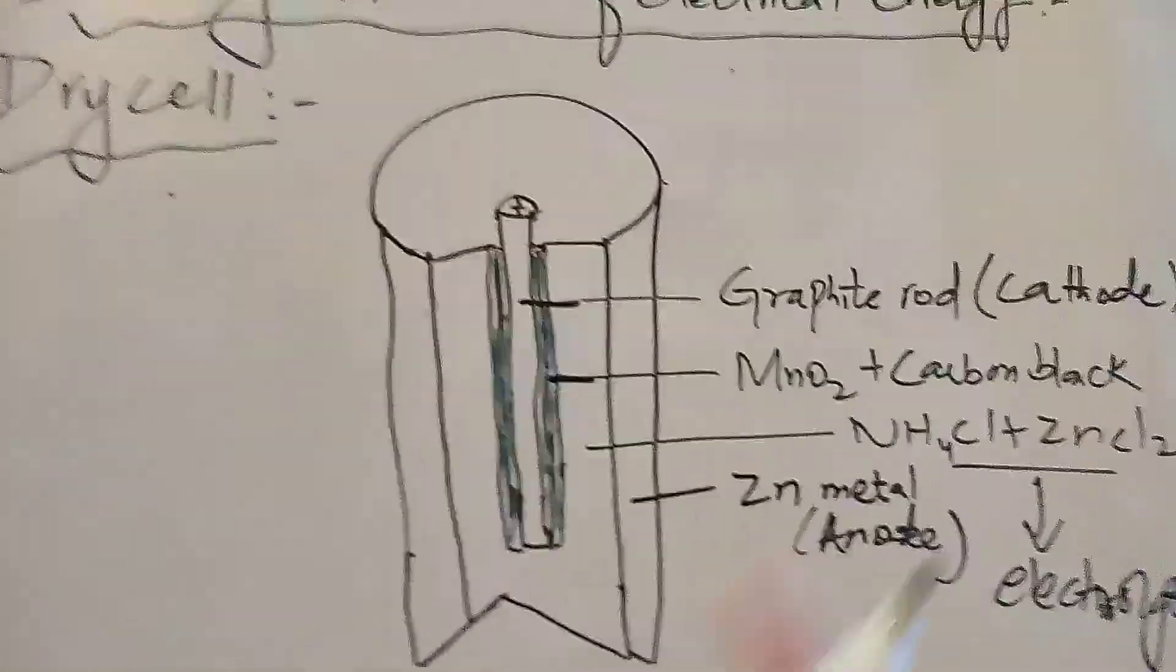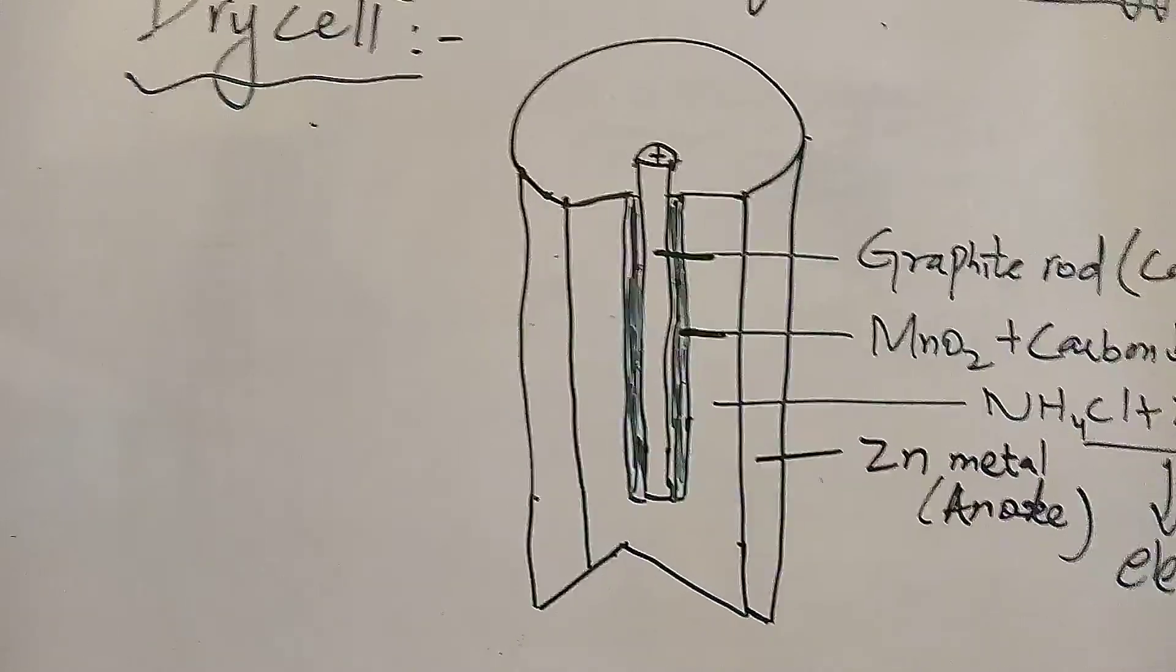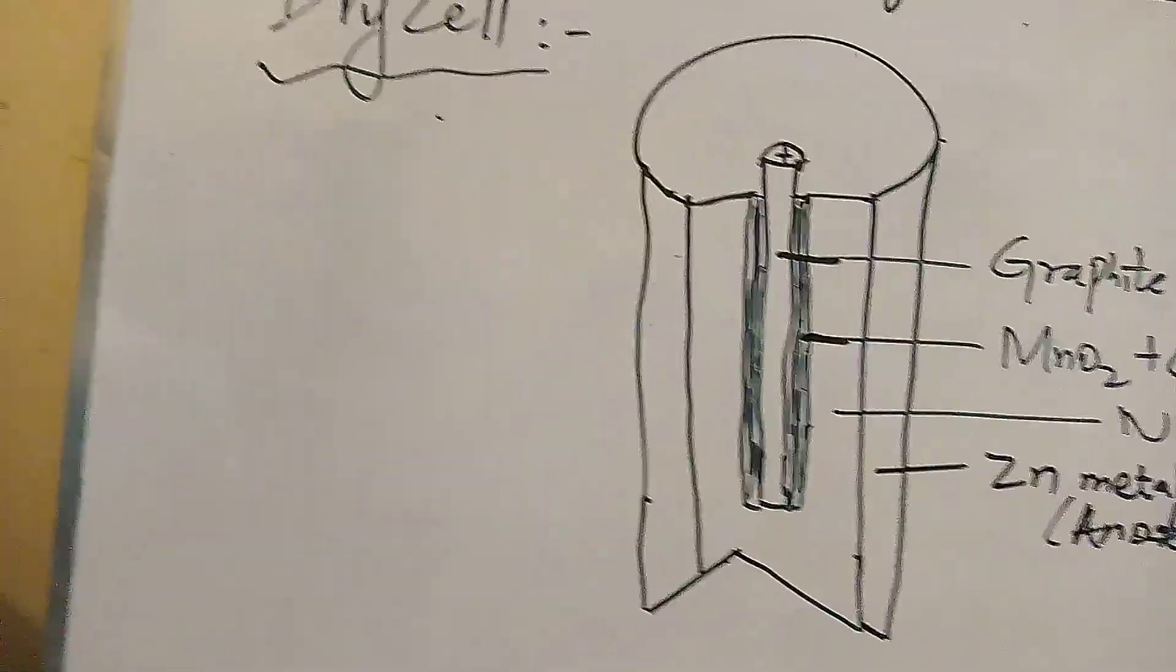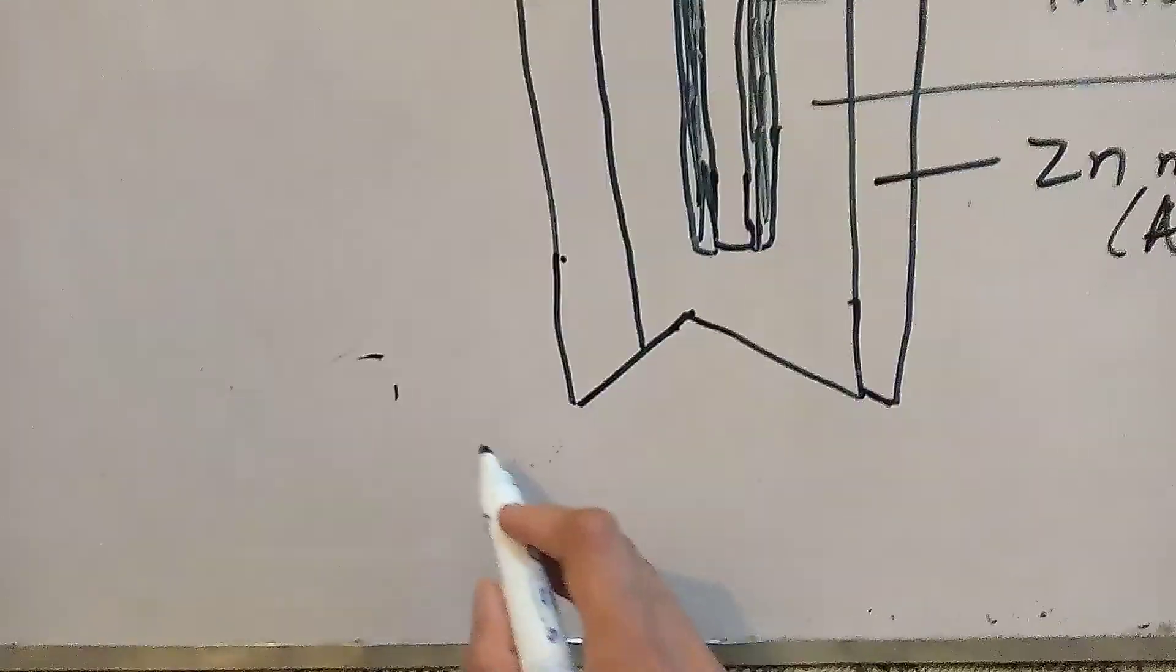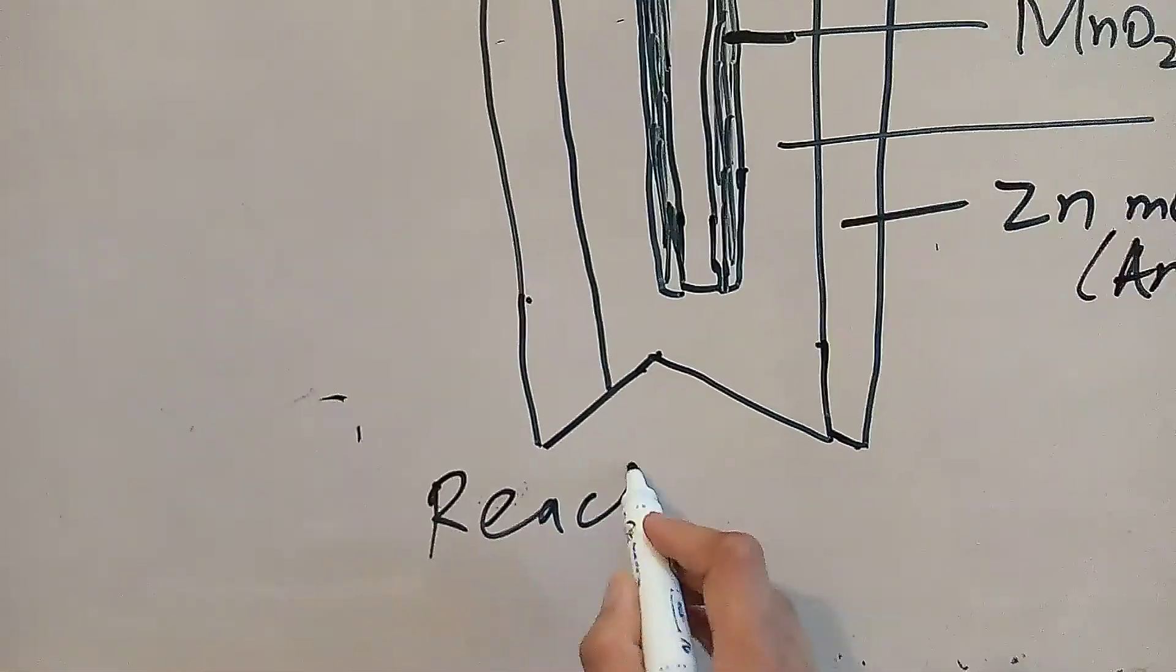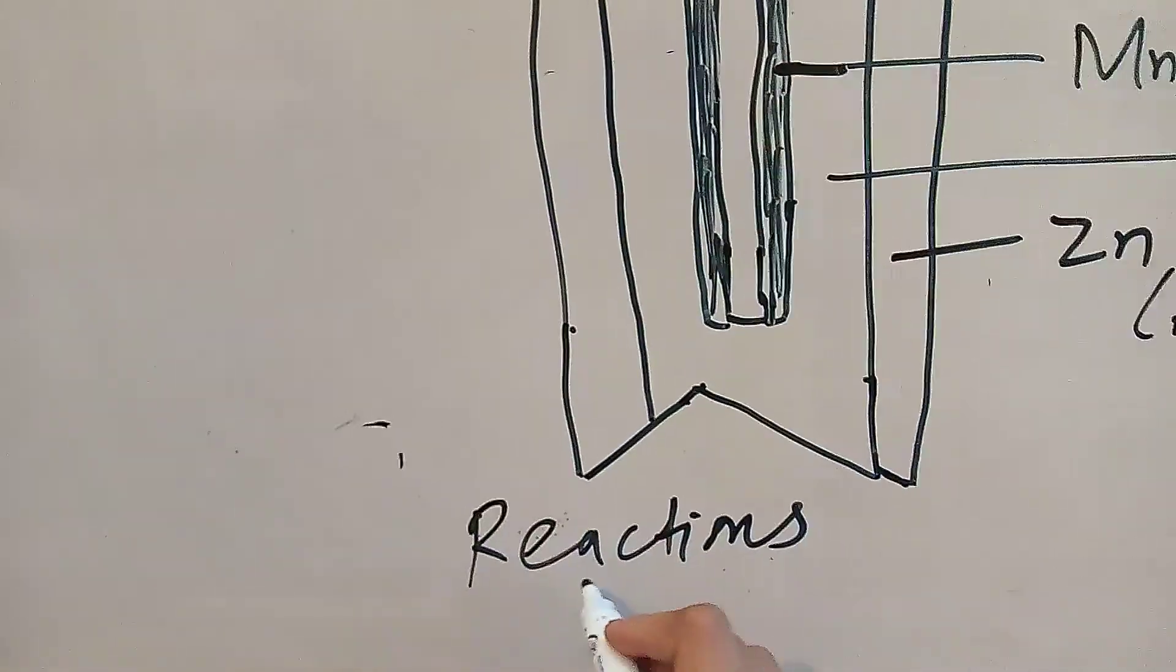When the cell is used, it usually generates a potential of 1.5 volt. And there are different reactions. You can see the heading of reactions taking place at electrodes.